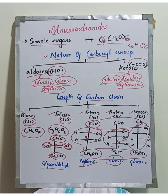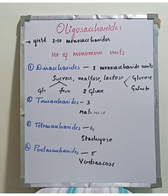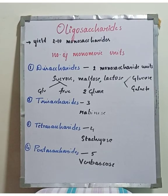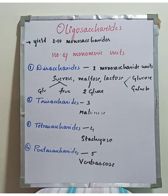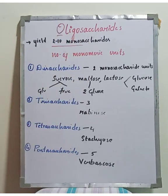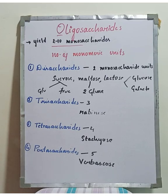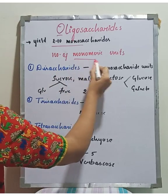Now we will look at the classification of oligosaccharides. Oligosaccharides are compounds that upon hydrolysis yield 2 to 10 monosaccharide units such as glucose, fructose, glyceride, and erythrose. They are classified based on the number of monomeric units.